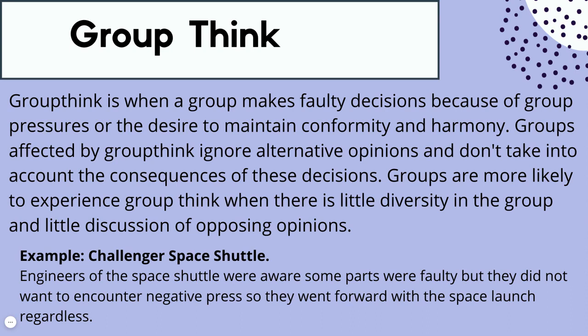There are two phenomena that happen in groups: group think and group polarization. Group think is when a group makes faulty or poor decisions because of group pressures to conform, maintain harmony, or avoid conflict. A group experiencing group think will often ignore alternative opinions and not take into account the consequences of their decisions.